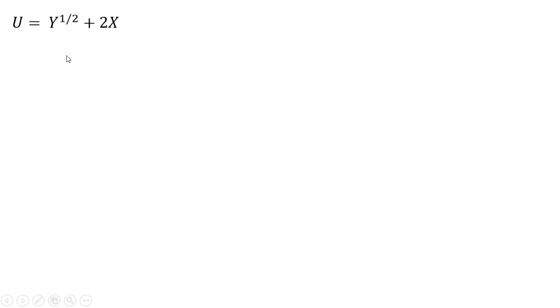So here's our utility function. We're going to get the marginal utility of good X. Taking the partial derivative of the utility function with respect to X, we get back 2.